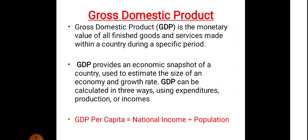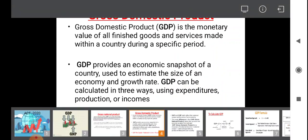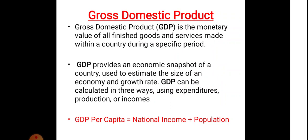Gross Domestic Product is the monetary value of all the finished goods and services made within a country during a specific period. All the goods and services produced in a particular country in a specific period are called Gross Domestic Product.